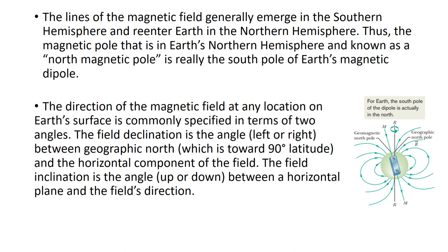The magnetic field — the magnetic lines of forces — form magnetic dipoles in circles or curves around the Earth. These magnetic lines of forces emerge from the Southern Hemisphere and re-enter in the Northern Hemisphere. So the North Magnetic Pole, which we call by that name in the Northern Hemisphere, is in reality the south pole of the Earth's magnetic dipole.